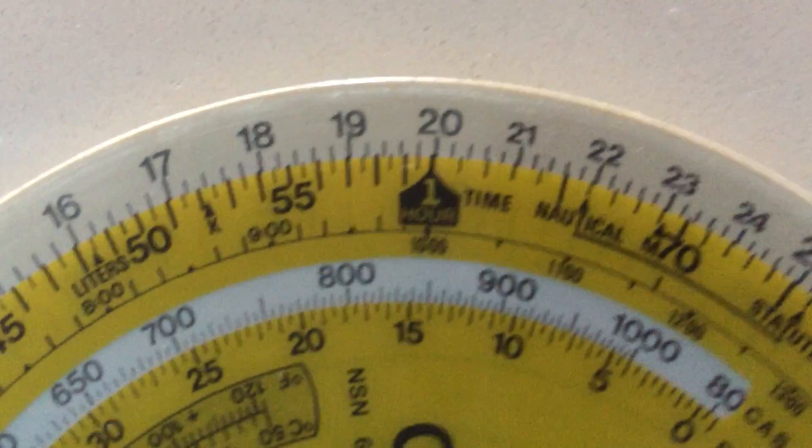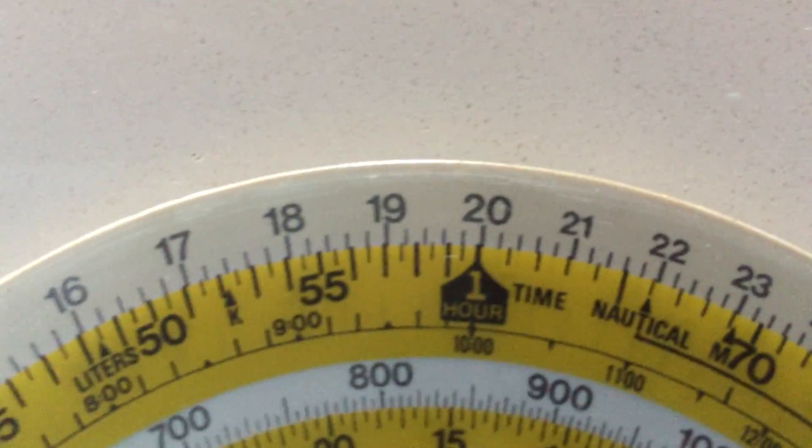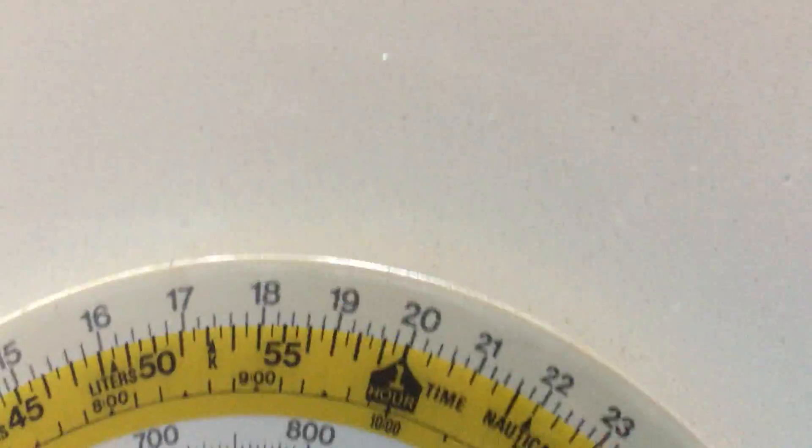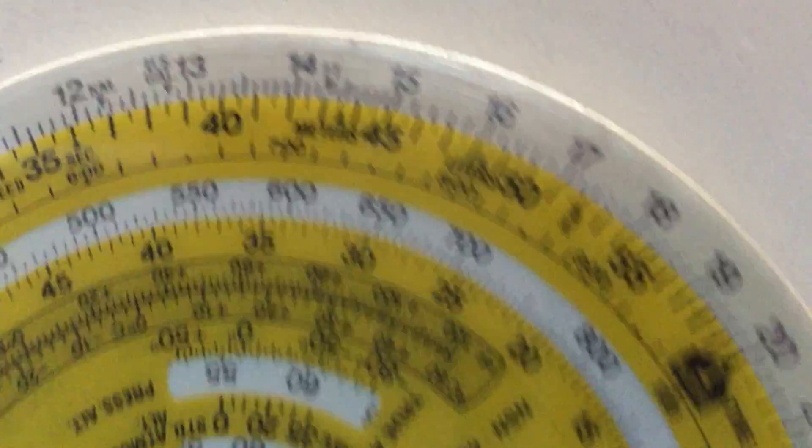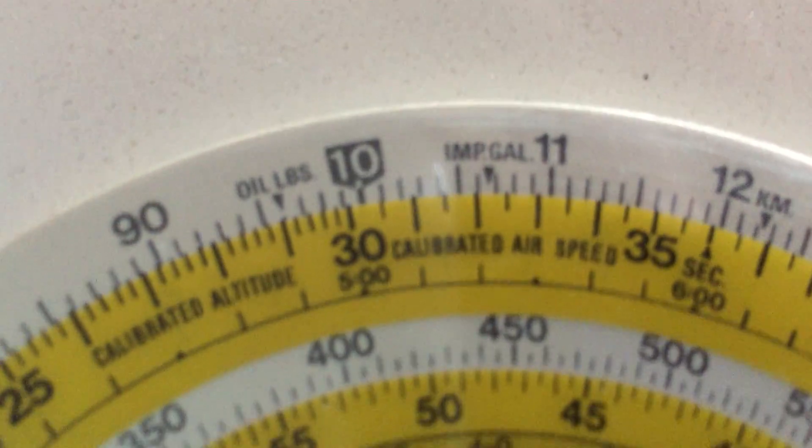In other words, we've taken the one hour mark, put it on 20 litres. Now let's look in 30 minutes, that would mean we've used exactly half of that, so 10 litres.